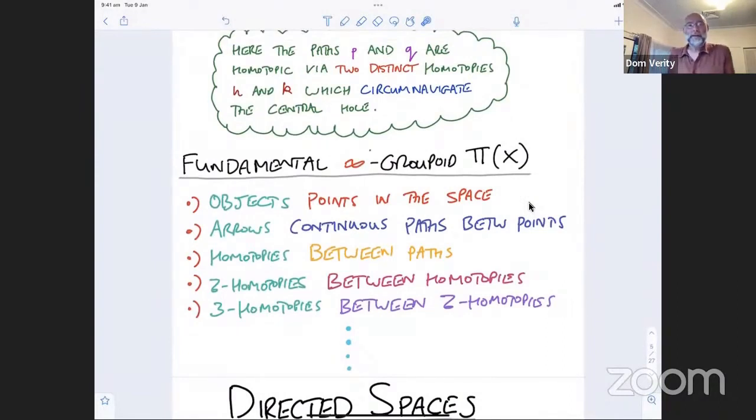So another way of organizing that is to create a thing called the fundamental infinity groupoid. So in the fundamental infinity groupoid, we now again have objects which are points in the space, and we have arrows which are continuous paths between points. But now we have homotopies between those paths as kind of two dimensional arrows in this groupoid. And we have homotopies between homotopies, and we have homotopies between two homotopies and so forth.